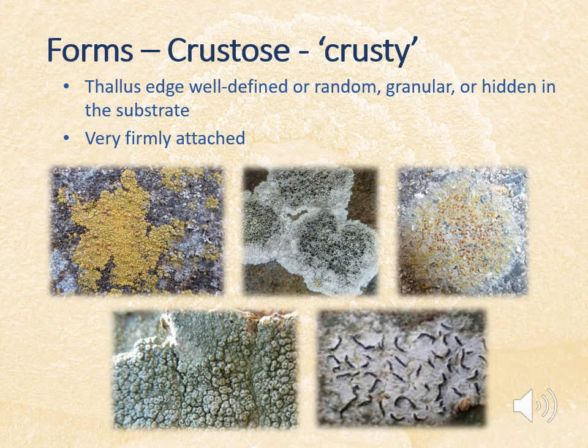The first type are the crustose lichens — lichens which form crusts over a surface. These are very firmly attached and can have very well-defined or quite random edges. The thallus can be very obvious or hidden in the substrate to a greater or lesser extent. For example, the yellow lichen in the top left has a very irregular edge and just a few apothecia dotted around, because bits of the thallus are actually immersed in the substrate.